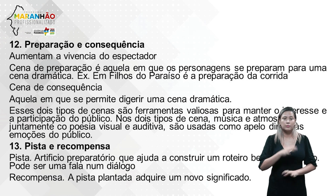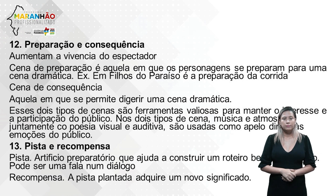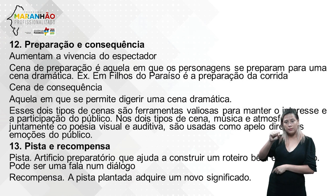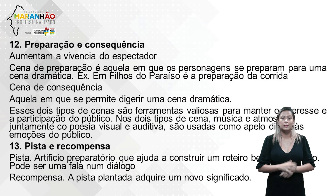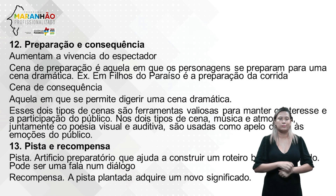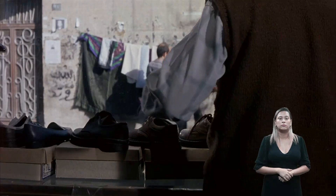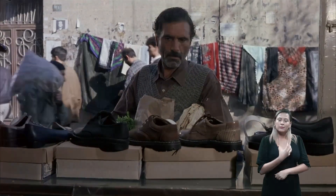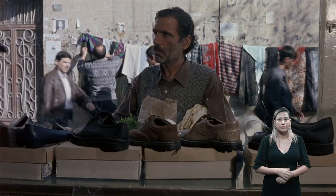Ferramenta 12: preparação e consequência. A cena de preparação é aquela em que os personagens se preparam para uma cena dramática — citando Filhos do Paraíso, é a preparação da corrida, que é o ápice do filme. A cena de consequência é aquela em que se permite digerir uma cena dramática. Esses dois tipos de cena são ferramentas valiosas para manter o interesse e a participação do público.